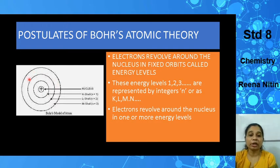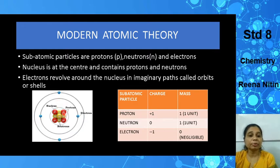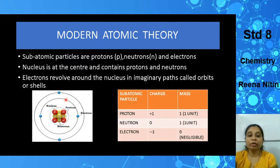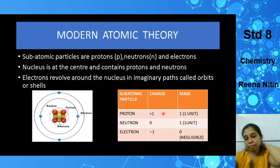These energy levels are also known as orbits, shells, or energy levels — all three mean the same thing. The subatomic particles: protons are represented by the letter P, neutrons by N, and electrons by E. Electrons move around the nucleus in imaginary paths known as orbits or shells. Protons and neutrons are at the center because they both have mass.